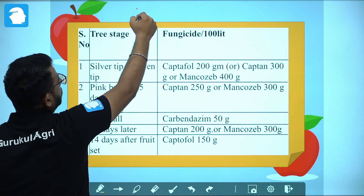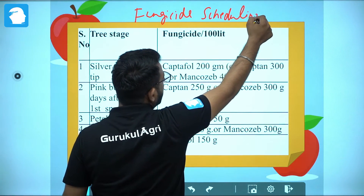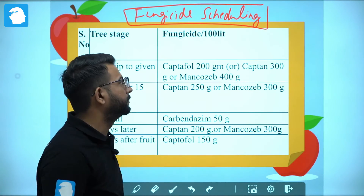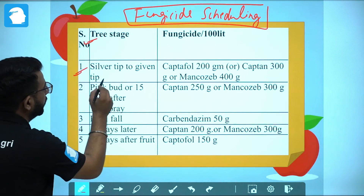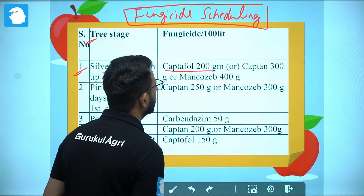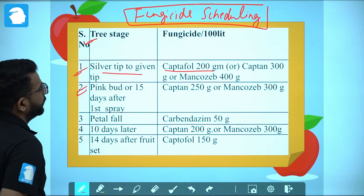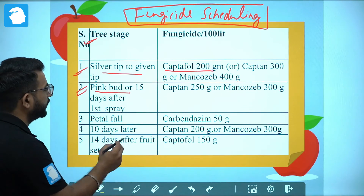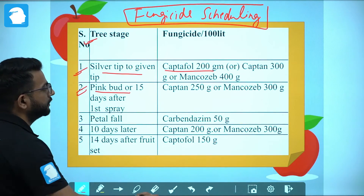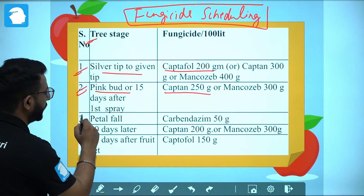Another management practice is fungicide scheduling. The first spray is done at the silver tip to green tip stage using Captafol 200g, Captan 300g, or Mancozeb. The second spray is done at the pink bud stage or 15 days after the first spray, again using Captan 250g or Mancozeb 300g.